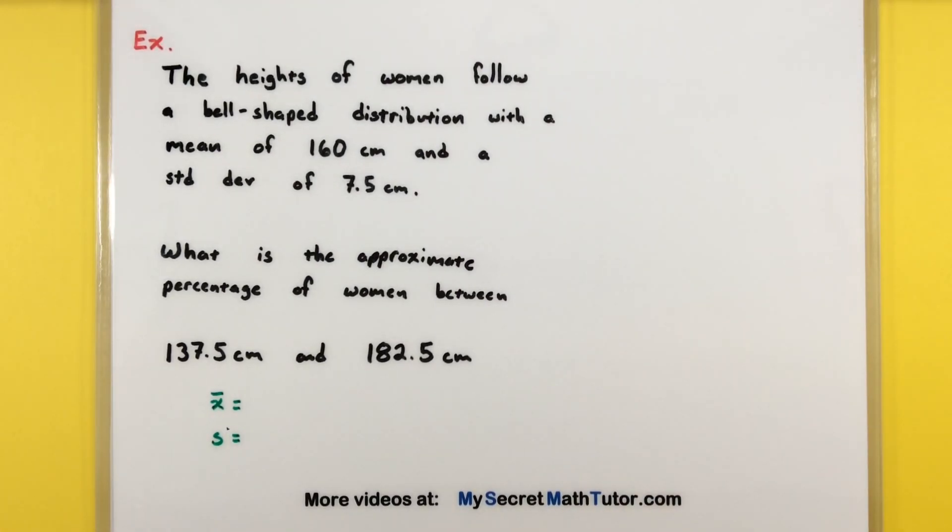In this example we're looking at the heights of women, and it looks like they follow a bell-shaped distribution. Remember, that's just another way of saying this is a normal distribution. It has a mean of 160 centimeters and a standard deviation of 7.5.